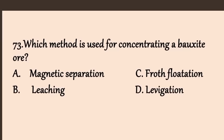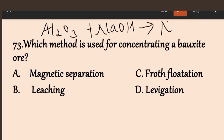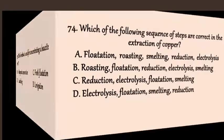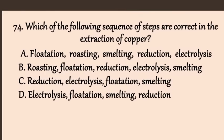Question 73: Which method is used for concentrating bauxite? A) magnetic separation, B) leaching, C) froth flotation, D) sedimentation. Froth flotation is for sulfide ores. Magnetic separation is for ferromagnetic materials. Leaching uses a proper solvent — sodium hydroxide attacks aluminum oxide in bauxite, forming sodium aluminate. So bauxite is concentrated by leaching. The answer is B.